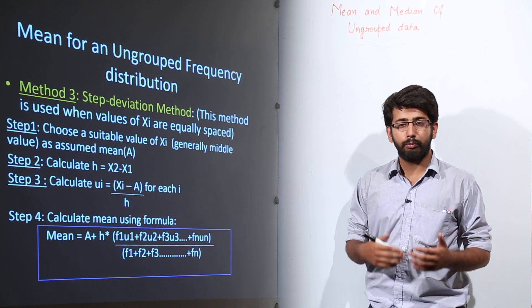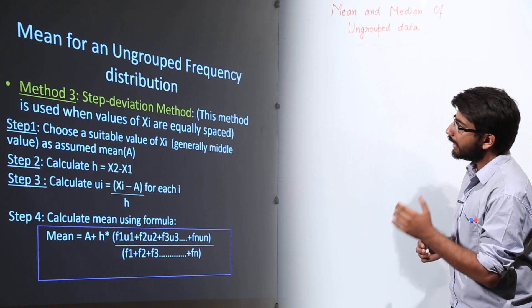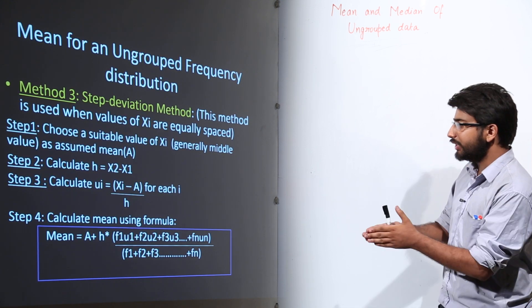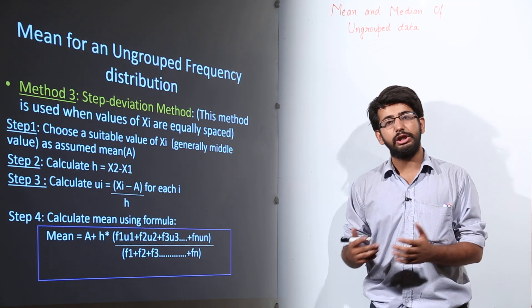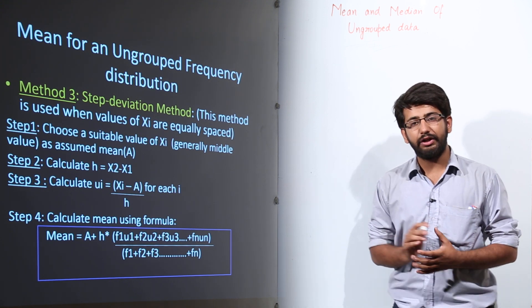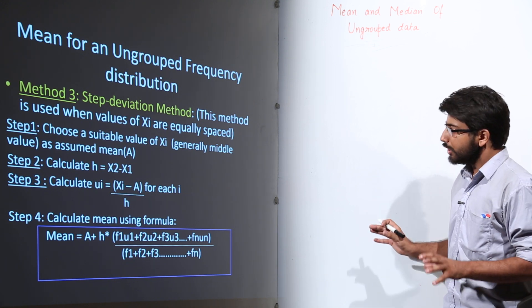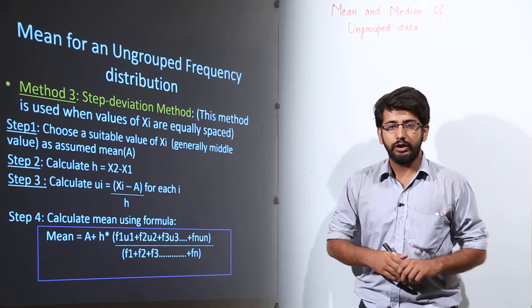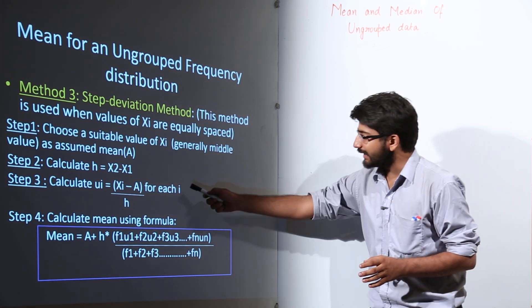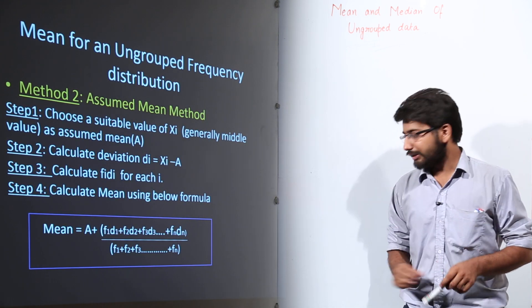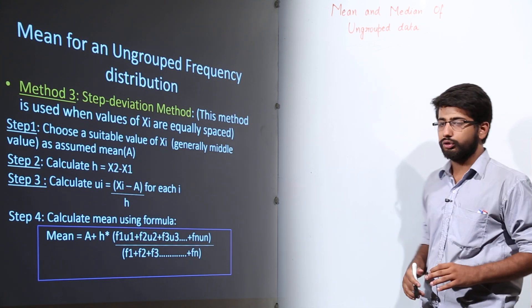The steps for the Step Deviation Method: Step 1 — select the middle or most suitable value of the variate, called the assumed mean. Step 2 — calculate the constant difference H between consecutive XI values, where H = X2 − X1 = X3 − X2. Step 3 — calculate UI = (XI − A) / H, which is DI divided by H. Then use the formula to find the mean.